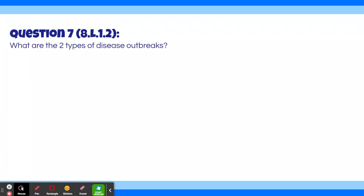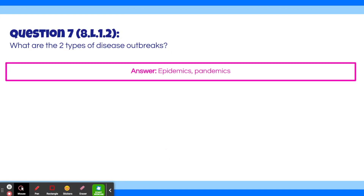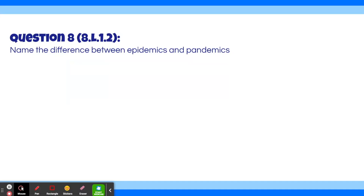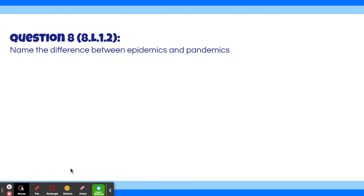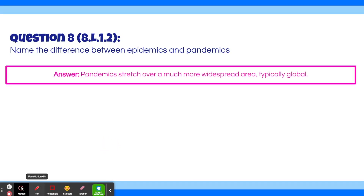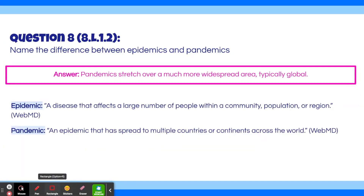Question 7: What are the two types of disease outbreaks? The answers are epidemics and pandemics. Question 8: What is the difference between epidemics and pandemics? Pandemics stretch over a much more widespread area, typically global. An epidemic is a disease that affects a large number of people within a community, population, or region. A pandemic is an epidemic that has spread to multiple countries or continents. An easy way to remember it: the P in pandemic stands for passport, because pandemics typically go across the globe.